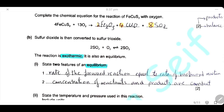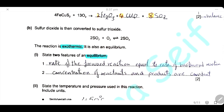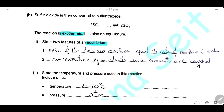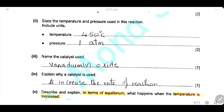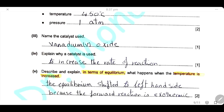Sulfur dioxide is then converted into sulfur trioxide by reacting with oxygen; this reaction is exothermic and is also in equilibrium. Two features of equilibrium: the rate of the forward reaction equals the rate of the backward reaction, and the concentrations of reactants and products are constant. The temperature used in the contact process is 450°C, the pressure is 1 atmosphere, and the catalyst used is vanadium pentoxide. Catalyst is used to increase the rate of reaction.